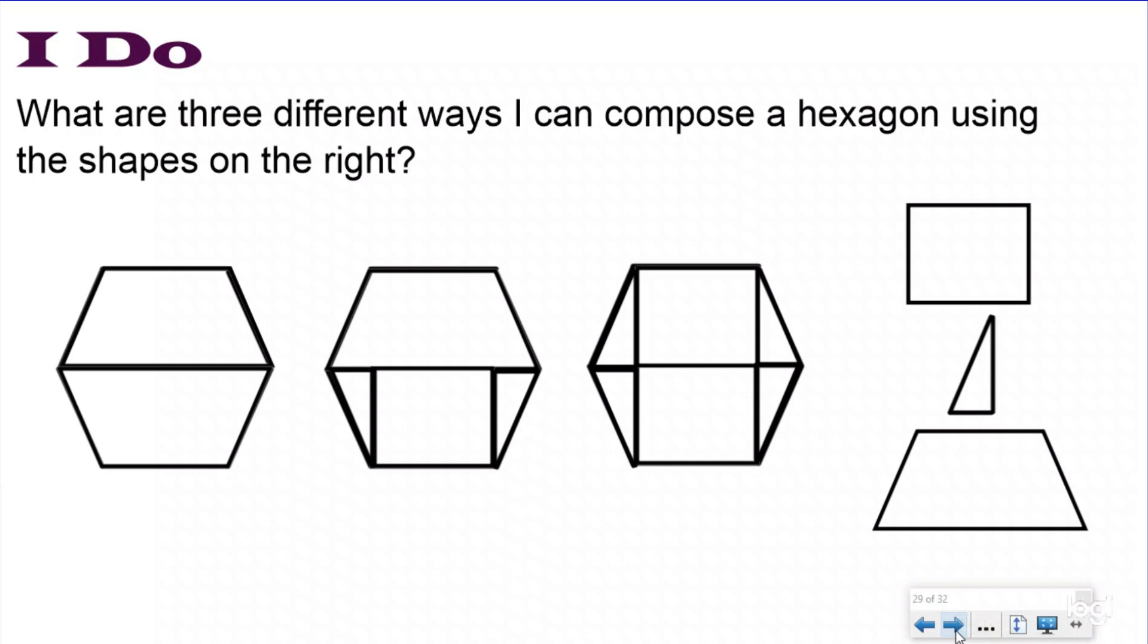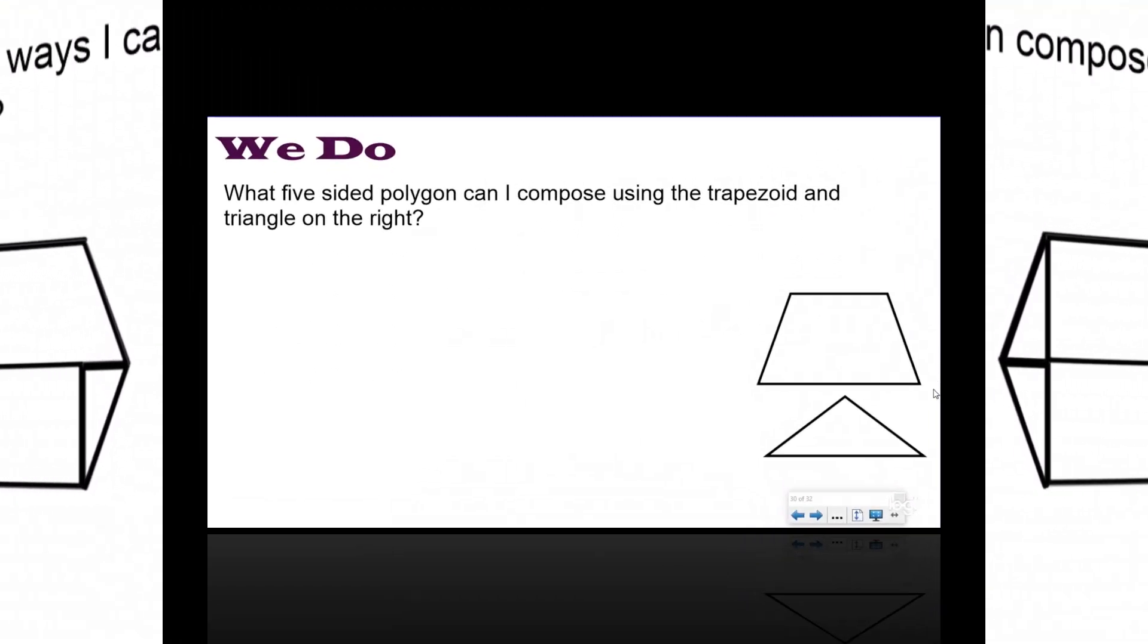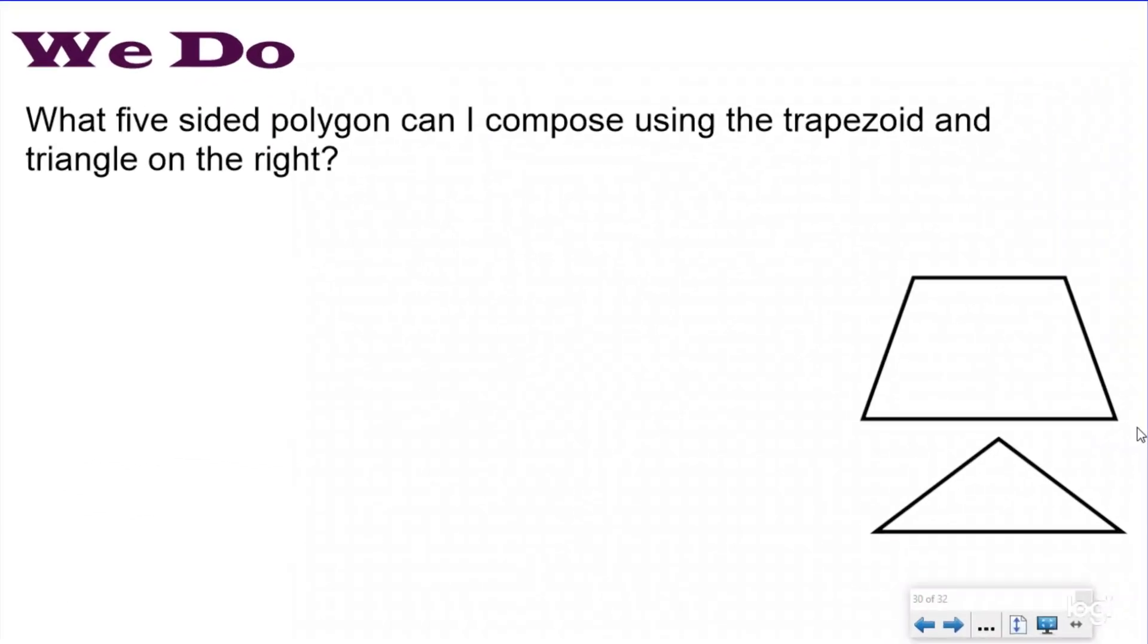So those were three different ways I could compose a hexagon. Let's take a look at a we do problem. My question says, what five sided polygon can I compose using the trapezoid and the triangle on the right? They're giving me the shapes I'm going to use. I'm going to highlight five sided polygon because that's another way of saying pentagon.